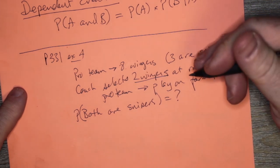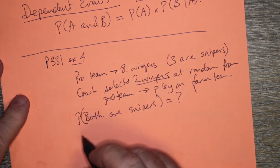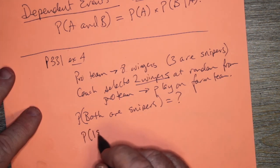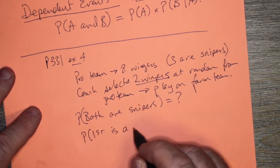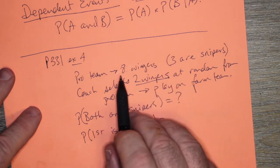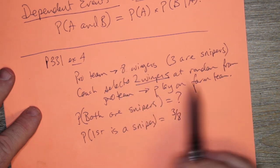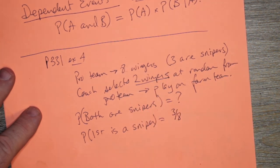You select your first winger, then you select your next one. So here you select your first winger. So the probability that first is a sniper is equal to, well, there's three snipers out of eight wingers. So it's three over eight. Eight is kind of like your sample space and three is like your desirable outcome.